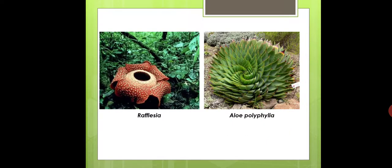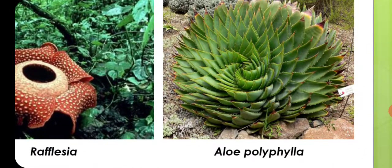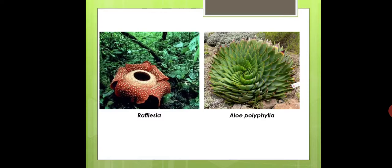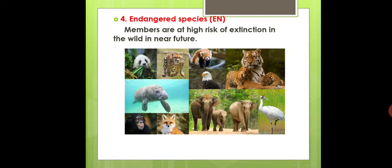Plant examples of endangered species include Rafflesia — the largest flower plant — and Aloe polyphylla, a species related to Aloe vera. There are many examples coming under this category of Endangered Species, abbreviated as EN.